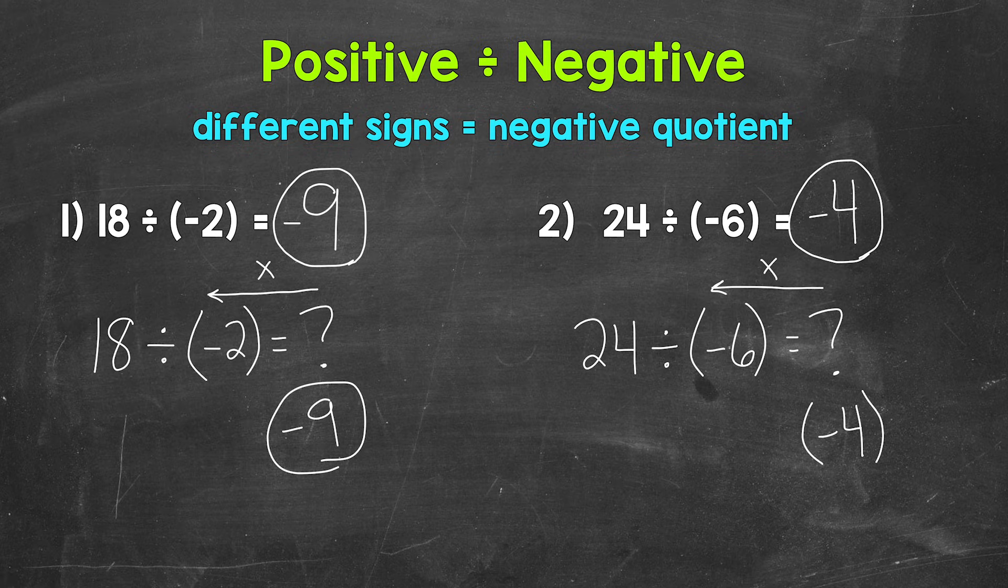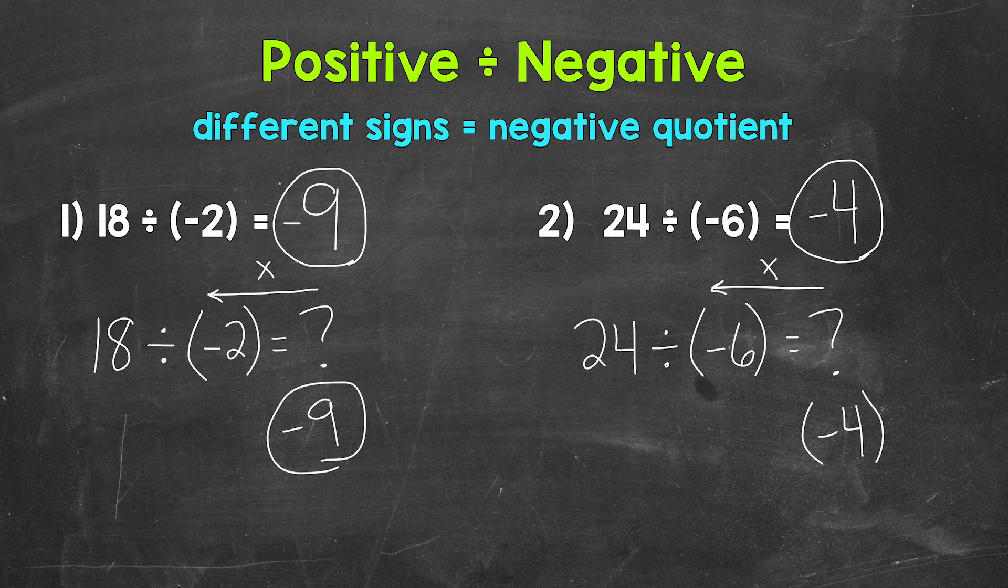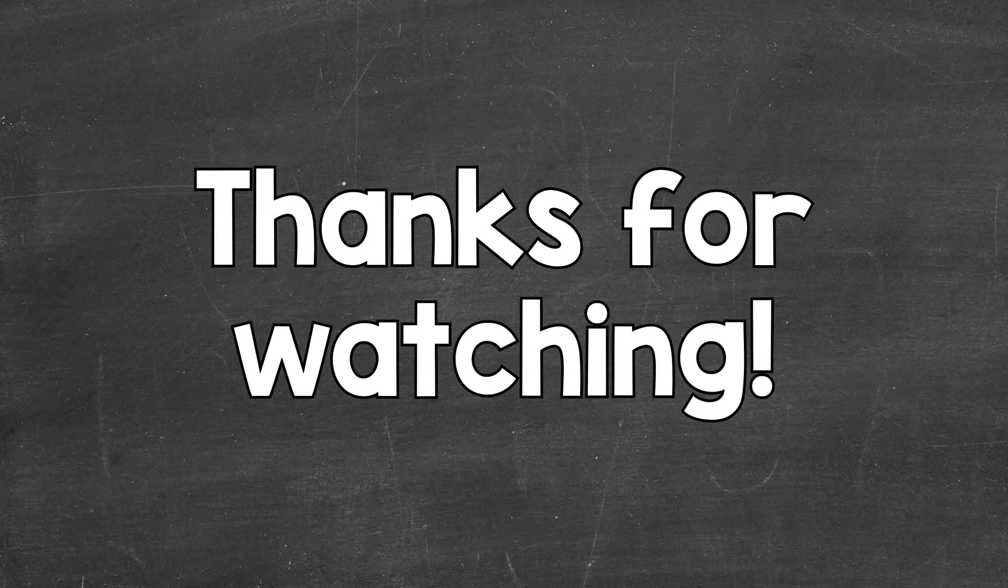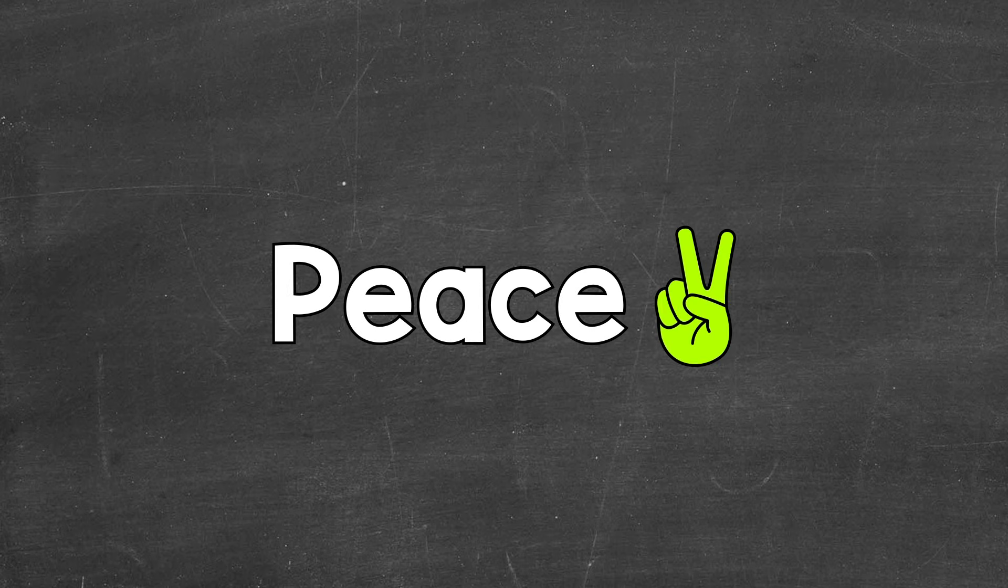So there you have it. There's how you divide a positive integer by a negative integer. Remember, different signs. That's going to equal a negative quotient. I hope that helped. Thanks so much for watching. Until next time. Peace.